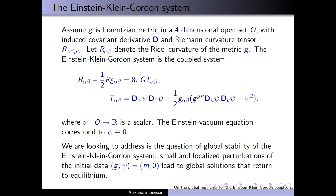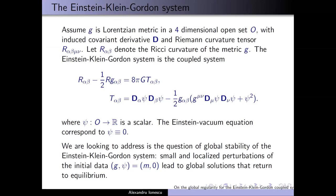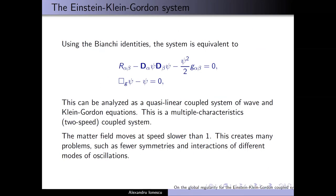What I'm going to talk about is the global asymptotic stability of the trivial solution, which is the Minkowski metric M and the scalar field equal to zero, as a solution of the Einstein Klein-Gordon coupled system. We are going to prove that if we start with a small perturbation of this special solution, then the solution will stay global and we'll have a very precise description of the behavior at infinity, including the ADM mass, the Bondi mass, and the Bondi energy.